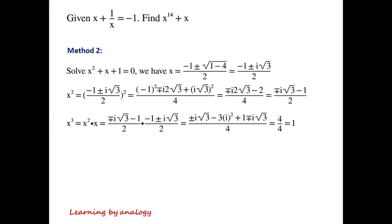Computing x cubed as x squared times x, we substitute and simplify to get x cubed equals 4 over 4 equals 1.